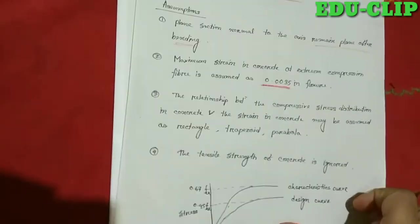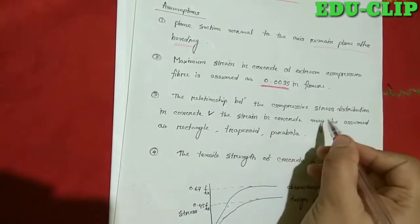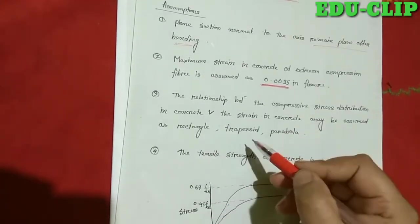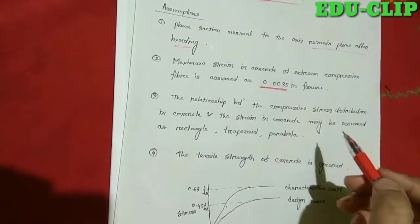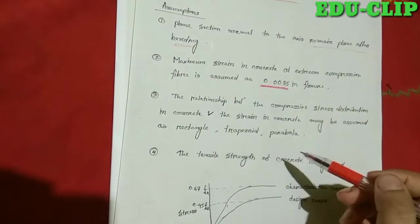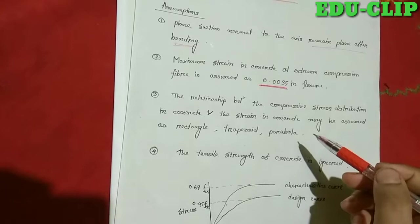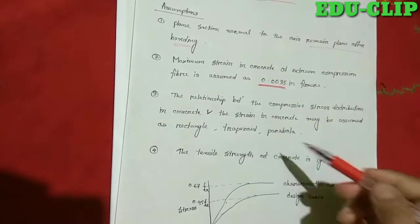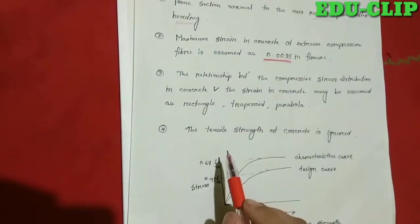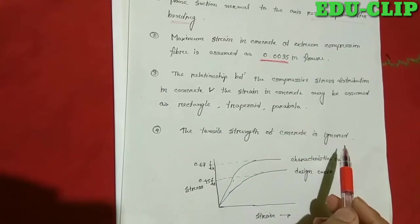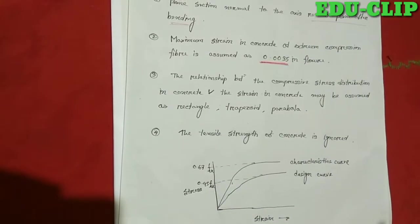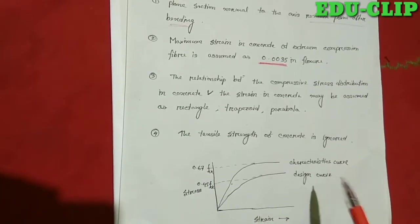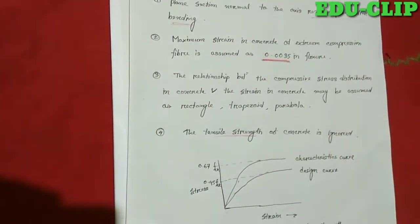The third assumption is: the relationship between the compressive stress distribution in concrete and the strain in concrete may be assumed as rectangle, trapezoid, or parabola. The fourth assumption is: the tensile strength of the concrete is ignored, since concrete is weaker in the tensile zone and stronger in the compressive zone.